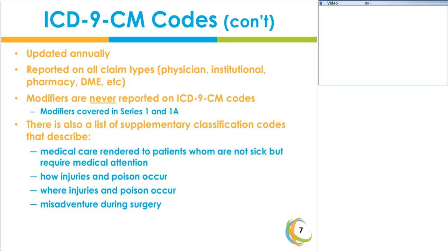In addition to the ICD-9 code set, the codes are used to describe services rendered to patients who present for medical care when they are not sick. They also contain codes that describe how and where injuries and poisons occur, as well as misadventures during surgery — for example, complications that arise during a surgical procedure.